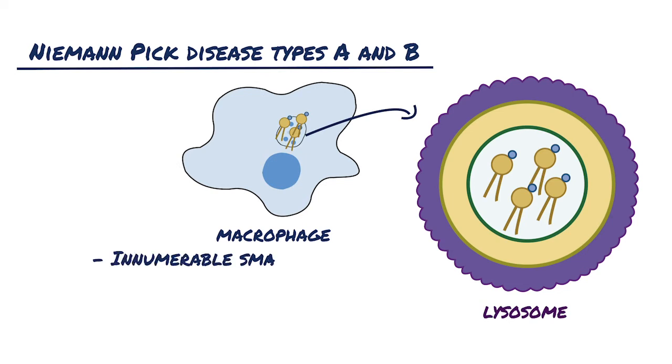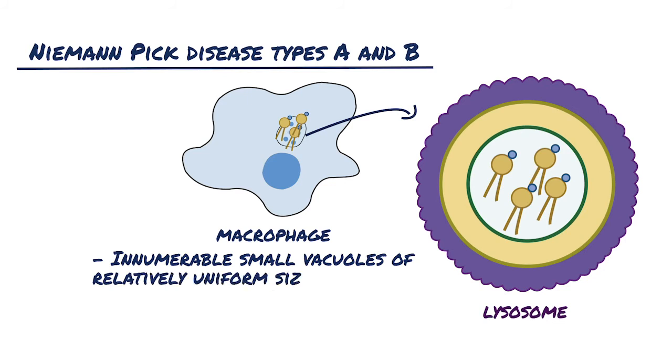Innumerable small vacuoles of relatively uniform size are created, imparting foaminess to the cytoplasm, and these cells are called foam cells.